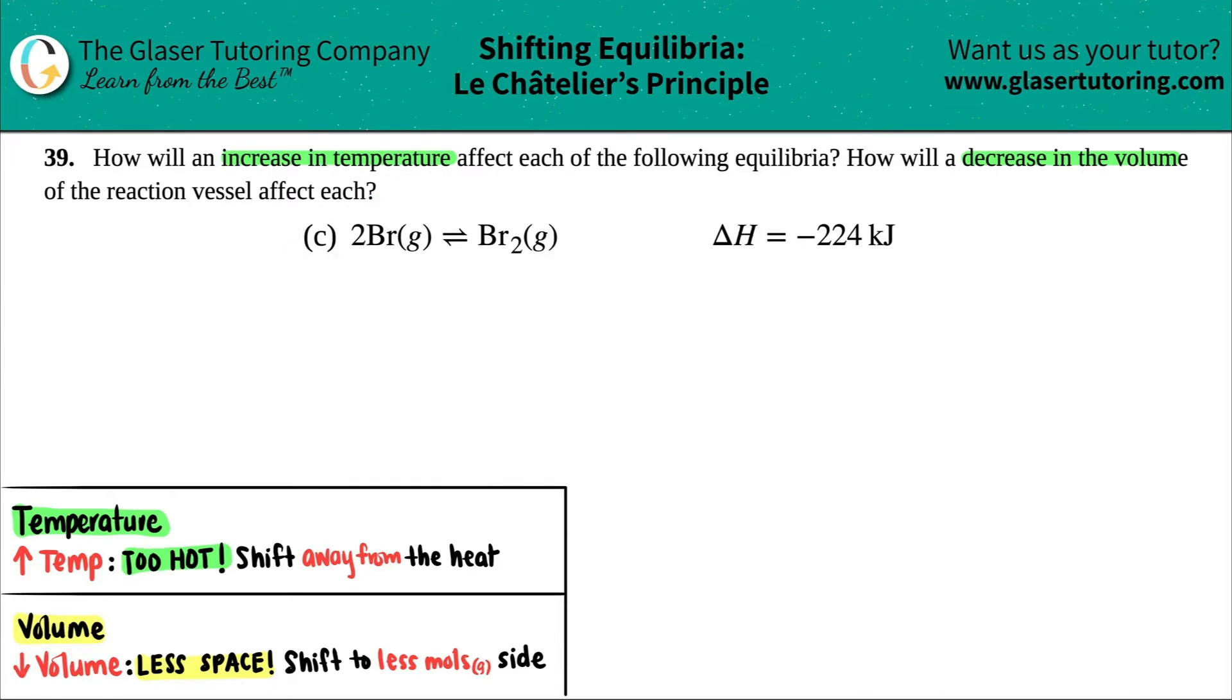So I got a balanced equation here, so I'm just going to rewrite it to make it work better. So I got two bromine gas. This comes to equilibrium. I see the double arrow with Br2 gas.